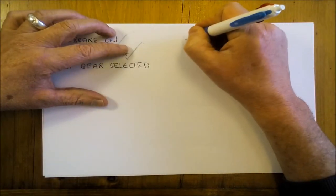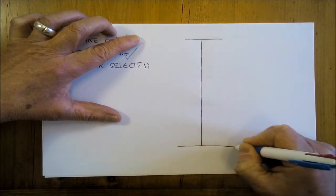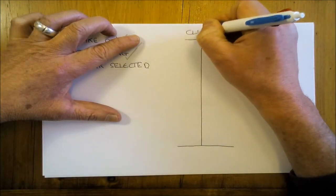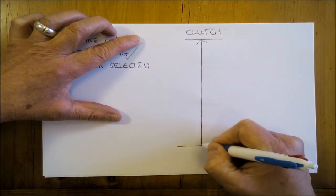So what I want you to do is imagine that this is the clutch pedal and it's representing the travel of the pedal all the way down.